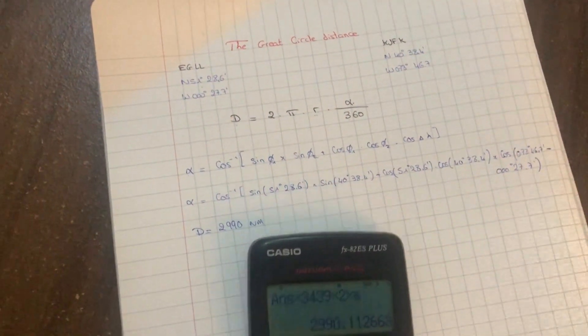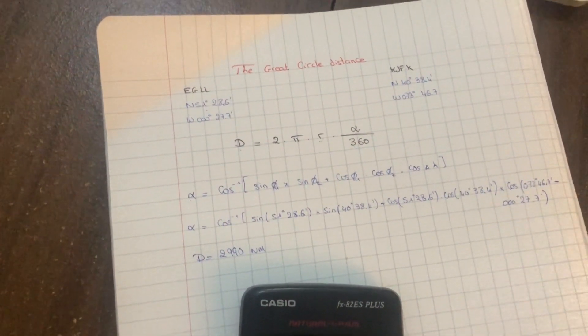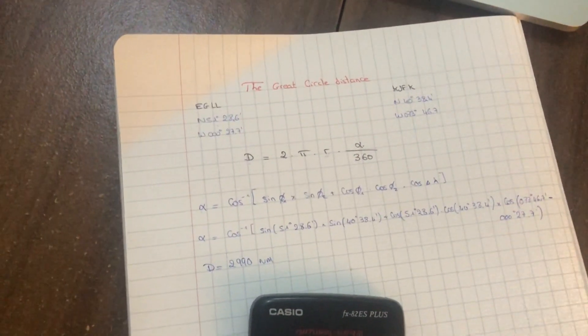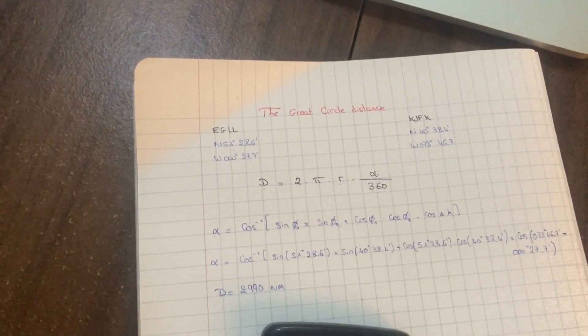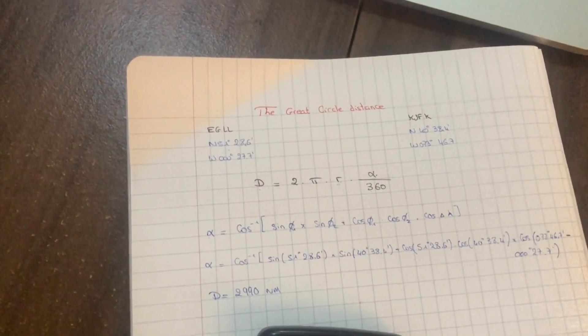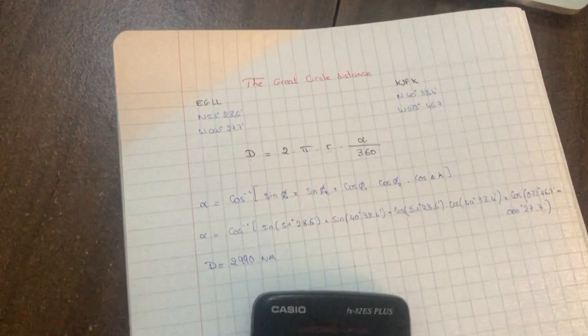Please keep in mind this is a direct great circle distance from point Heathrow to KJFK, and it does not consider any North Atlantic tracks or any weather deviation restriction. This is just a pure great circle distance.